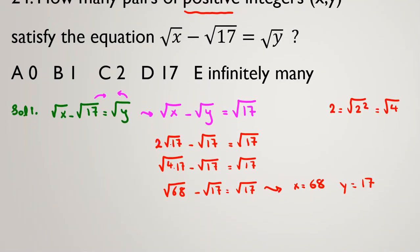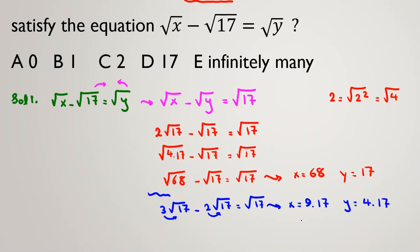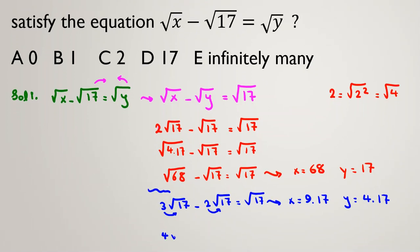Easily we can see this and conclude that instead of 2√17, we can do the same way with 3√17. Let me write it in second step. 3√17 - 2√17 = √17. Easily, you can say x equals 3 is outside. You should take it inside. It will be 9×17, and y, you should take 2 inside, 4×17, like previous one.